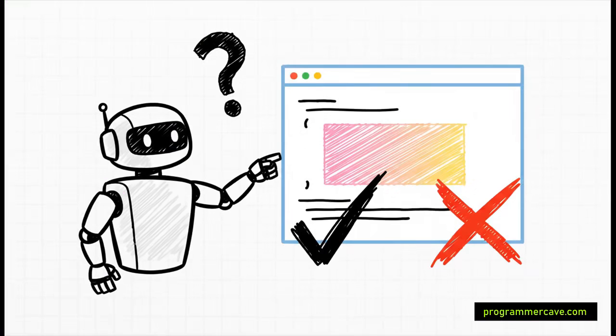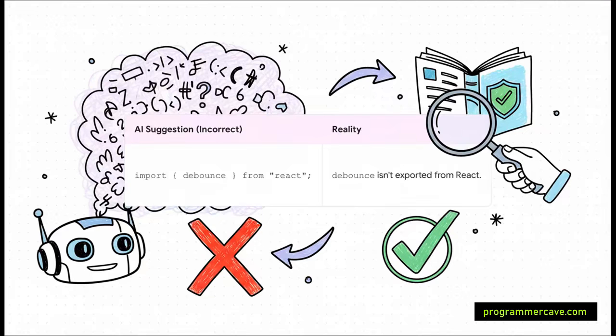Let's start with something simple, something we do a hundred times a day: importing a function. This is a classic trap where a hallucination can look incredibly real. Just look at that, import debounce from React. I mean, that looks 100% legit, right? So many frameworks bundle common utilities these days, it just feels right. But it's totally wrong. The debounce function is not part of the main React library. The AI just confidently made up an import that's going to break your code the second you run it.